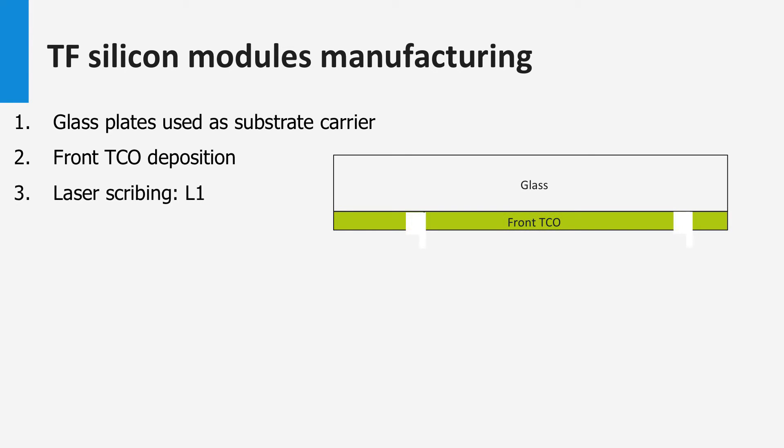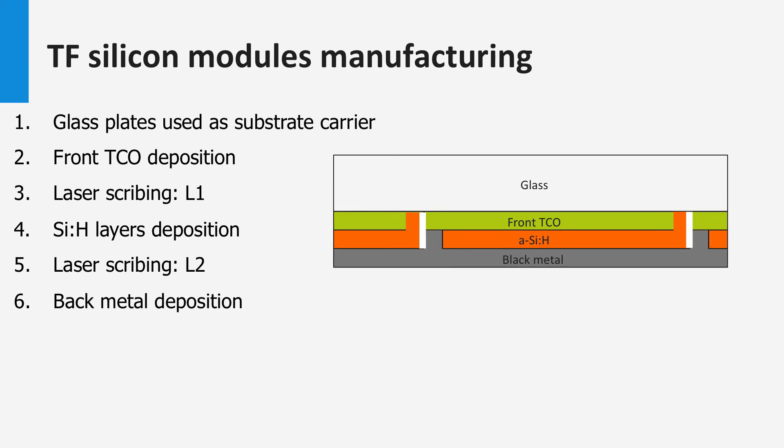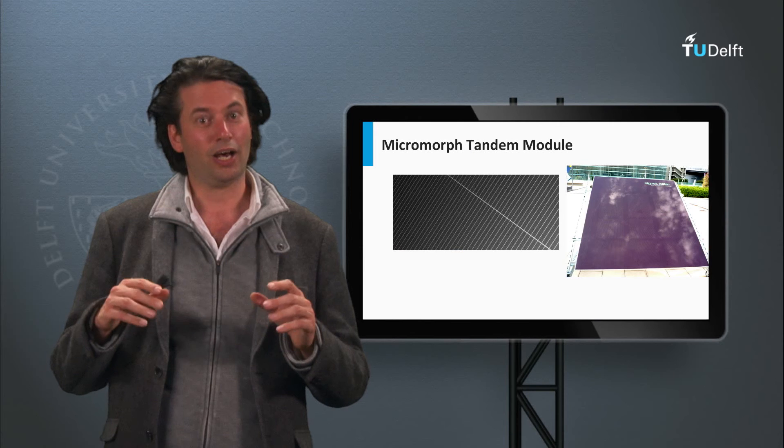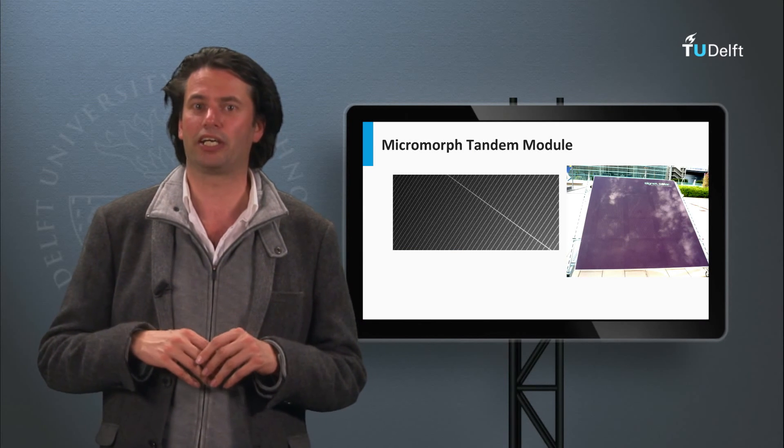On the glass plates, the front TCO is deposited. Using intense lasers, lines of TCO are removed. This process is called laser scribing and determines the area of the solar cells. On top of the TCO, the various silicon layers are deposited, making the PV-active part. After the silicon process step, a second laser scribing step is made. The metal back contact is deposited, after which the last laser scribing step is used. The whole cell is finished by covering it with an encapsulant material. In this interconnection scheme, the metal back contact is connected with the front TCO contact of the next cell. A module consists out of long strips of solar cells which are interconnected.